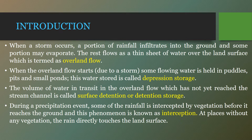Before discussing the factors affecting runoff and the computation techniques for runoff, let us first understand the runoff process. When rain falls, a part of it is intercepted by vegetation or stored in depressions on the ground surface — that is known as depression storage. When a storm occurs, a portion of rainfall infiltrates into the ground or some portion may evaporate, but the rest flows as a thin sheet of water over the land surface, which is termed overland flow.